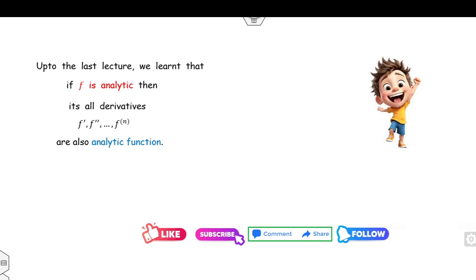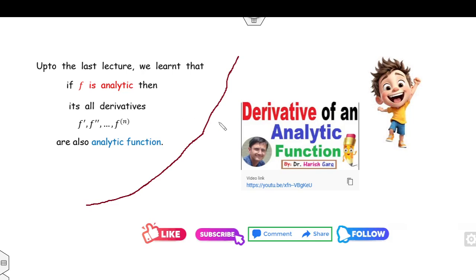Now, what we have discussed so far: we have learned that if a function is analytic in the complex domain D, then all its derivatives — whether the first, second, or nth derivative — are also analytic. For more detail about this concept, you must watch my lecture on the derivative of analytic functions.